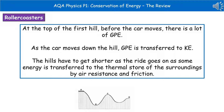Before that roller coaster car is going to move, it's got a lot of gravitational potential energy, or GPE. Then as it starts to move down that first hill, that gravitational potential energy is being transferred to kinetic energy, which is all about movement. As we get down to point B, we've got a lot of kinetic energy, but not much gravitational potential energy.